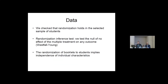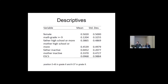We verify that randomization holds in the subset of students who can be tracked across grades. We perform randomization inference tests, including the Westfall-Young test, and confirm that randomization is valid. So we can proceed safely — the booklet assignment is random or as good as random, allowing us to identify clear results.